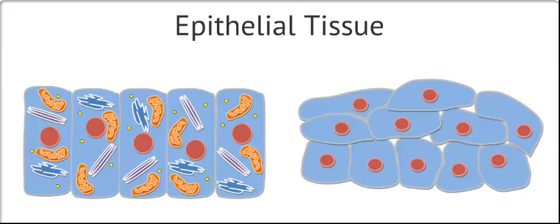This epithelial tissue is used to line the surfaces of our body. This includes both our outer and inner surfaces. The outer layers of our skin are definitely composed of epithelium, along with the inner lining of our digestive and respiratory systems. In fact, many of our internal organs and blood vessels have a lining of epithelial tissue.